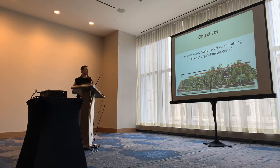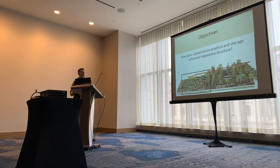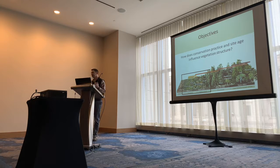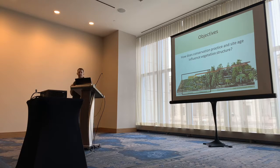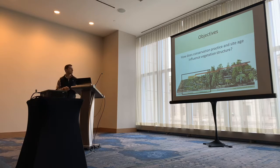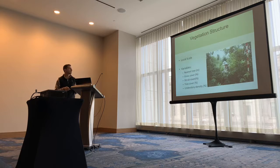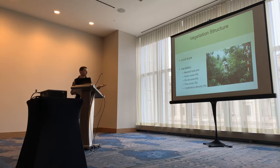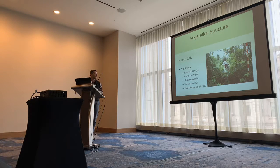The objectives of this study were to look at how conservation practice and site age influence vegetation structure. Site age ranged from 4 to about 16 years. The vegetation structure variables we looked at were nearest tree, grass cover, shrub cover, tree cover, and understory density.